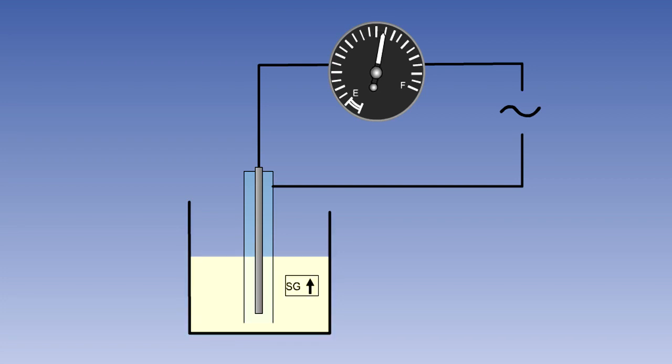The dielectric constant of fuel changes when its specific gravity changes. If the specific gravity of the fuel increases, more current will be allowed to flow in the circuit. And similarly, if the specific gravity decreases, the current flow will decrease.